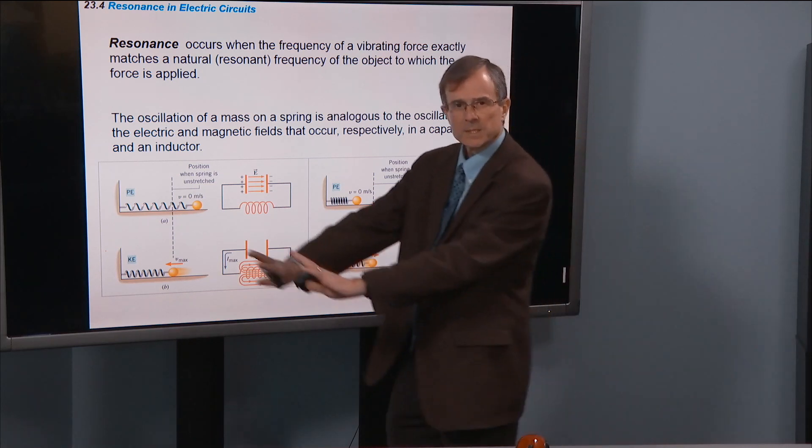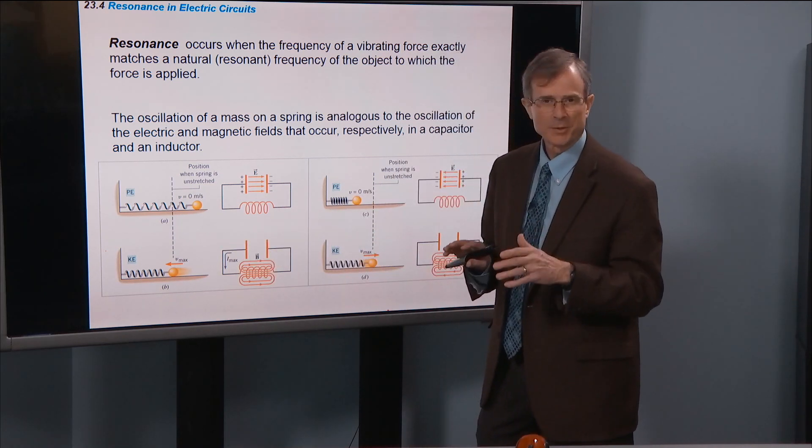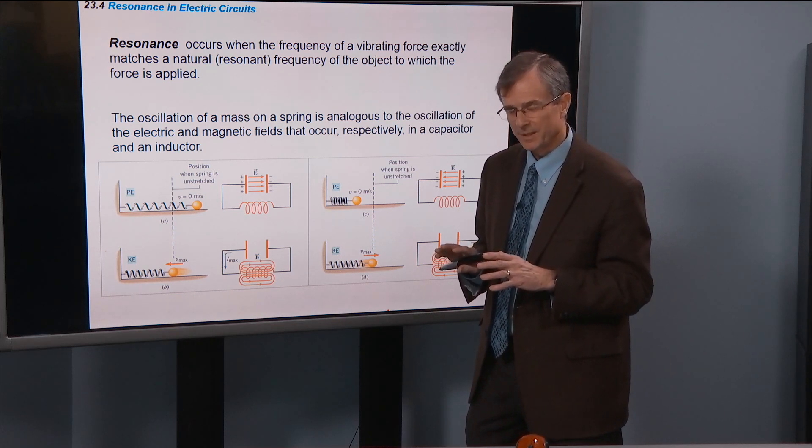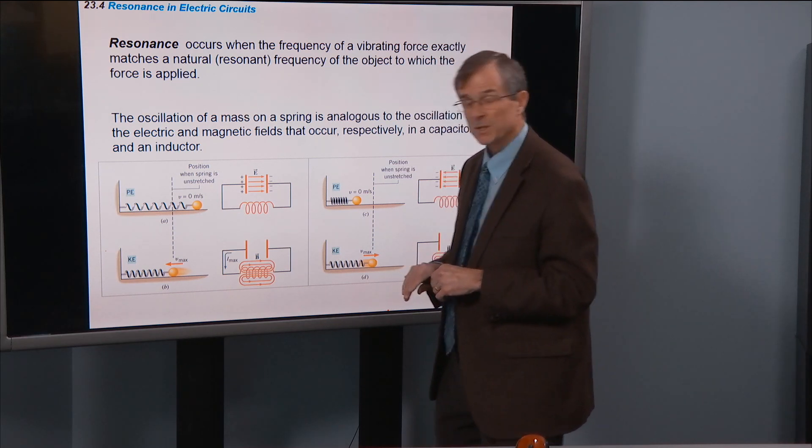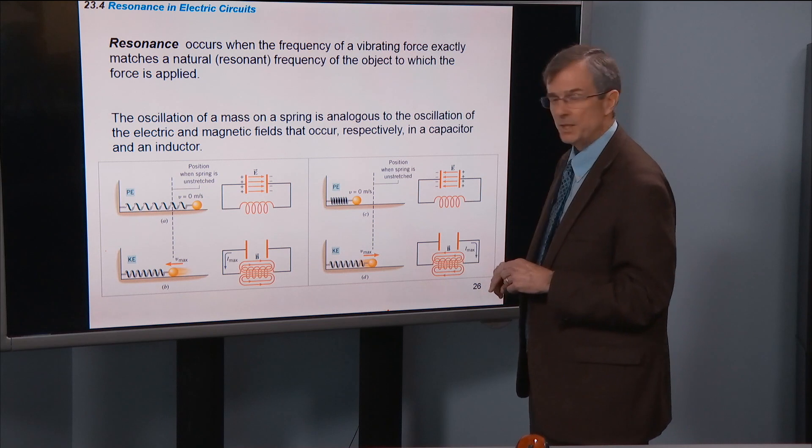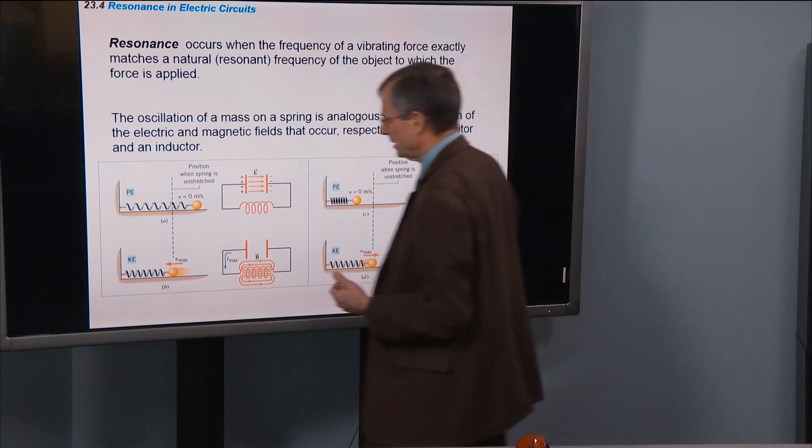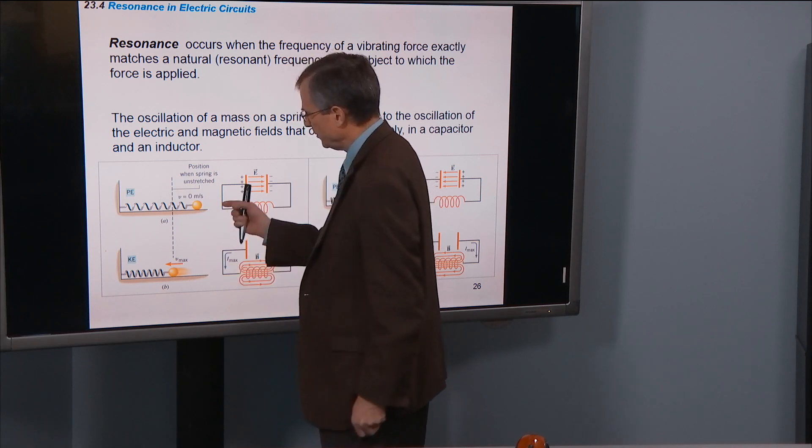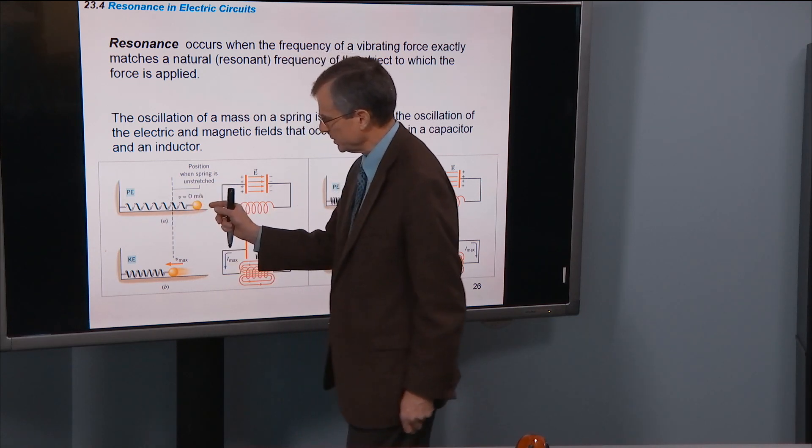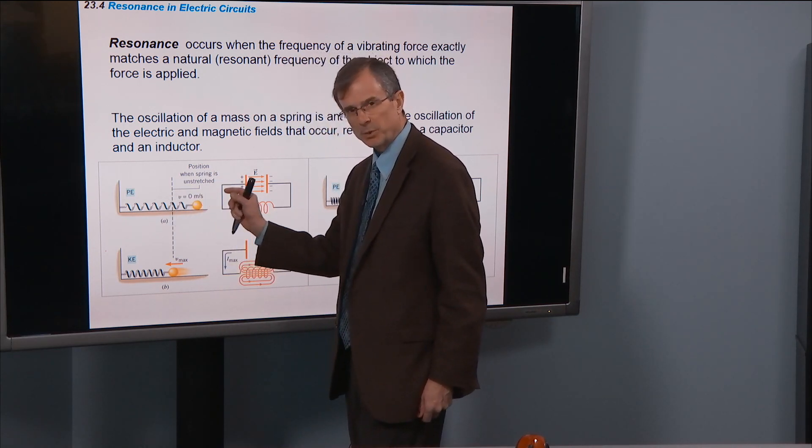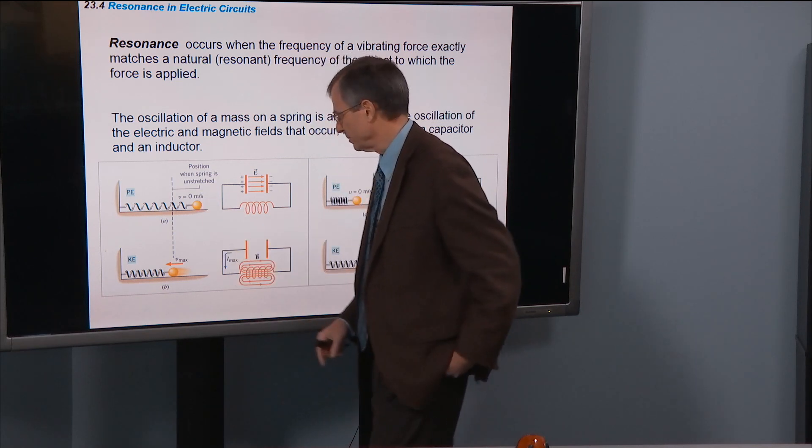To push once every period. If you pushed at some other frequency that wasn't once a period, then, once per cycle, then you wouldn't be able to increase the amplitude of the motion. Same thing here, a mass spring system, if you're going to try and get some motion on a mass spring system, just by pushing it a little bit at a time, you have to match the frequency.